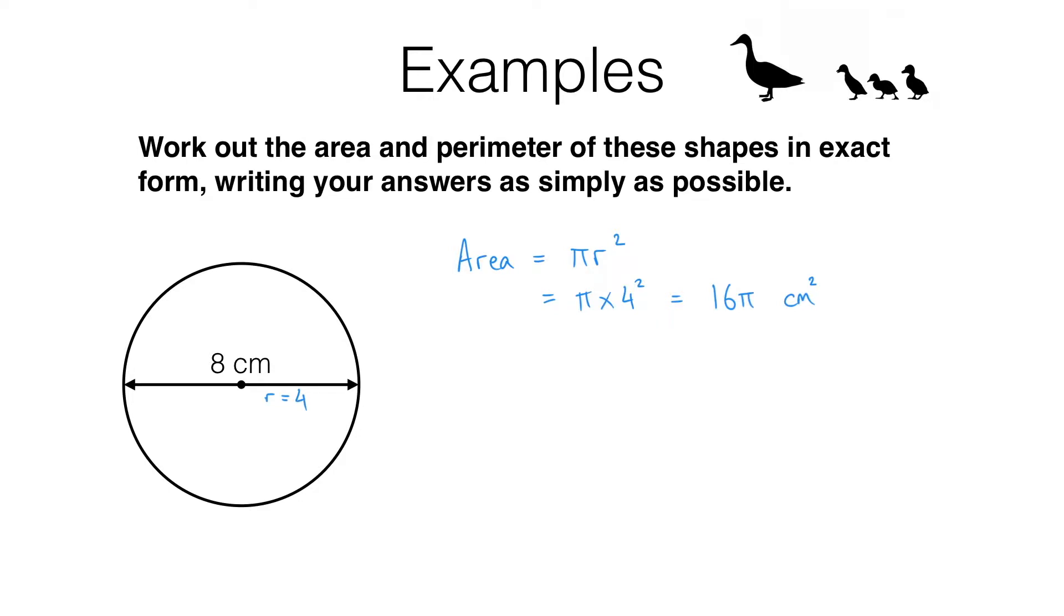We also need to work out the perimeter of this shape. Now the perimeter of a circle has a special name, it's called the circumference, and the formula is circumference equals pi times the diameter. In this case that is pi times 8, and that gives us an answer of 8 pi centimeters.